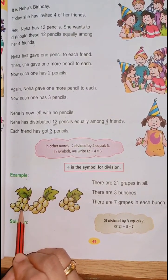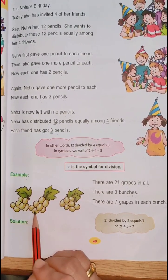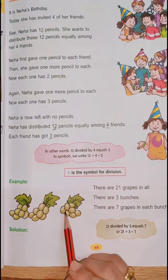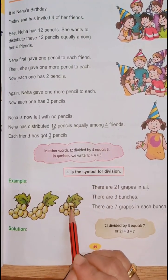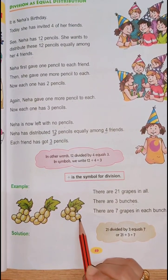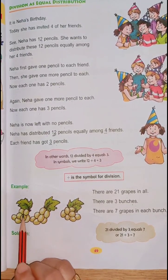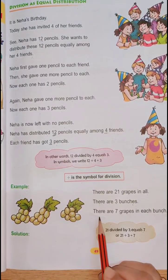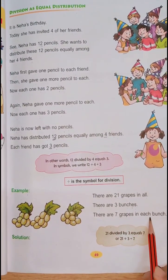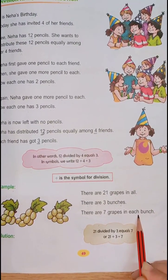1, 2, 3, 4, 5, 6, 7, 8, 9, 10, 11, 12, 13, 14, 15, 16, 17, 18, 19, 20 and 21. Yes, 21 grapes in three bunches. So there are seven grapes in each bunch.